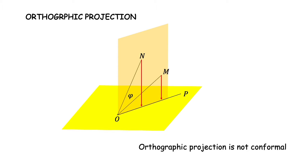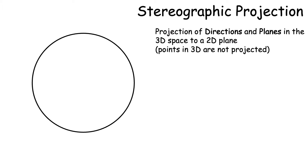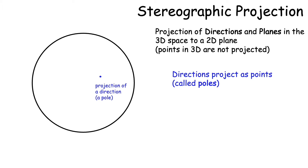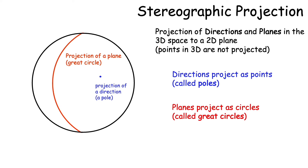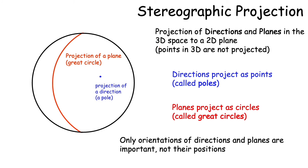Stereographic projection preserves such angular relationships. In stereographic projection, we project directions and planes — we do not project points. Directions project as points called poles, and planes project as circles called great circles. Only the orientations of directions and planes are important, not their positions. So all parallel directions will project to the same pole and all parallel planes will project to the same great circle.